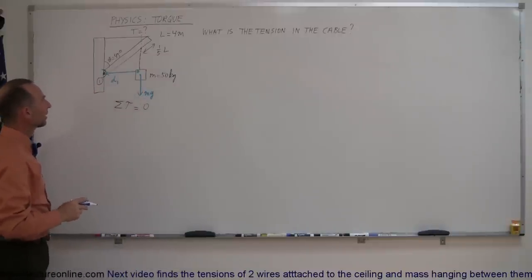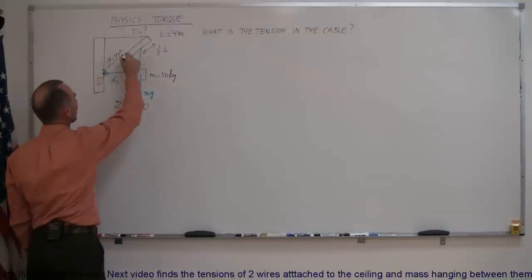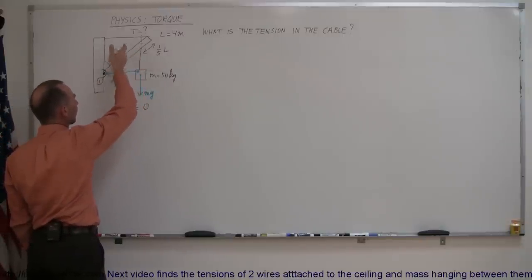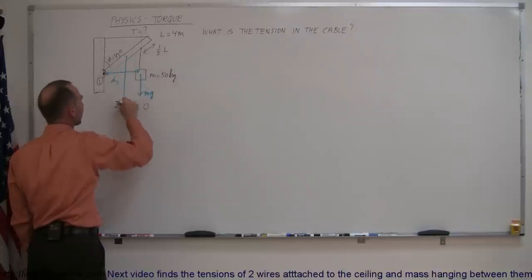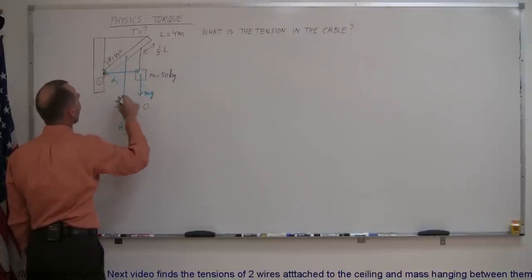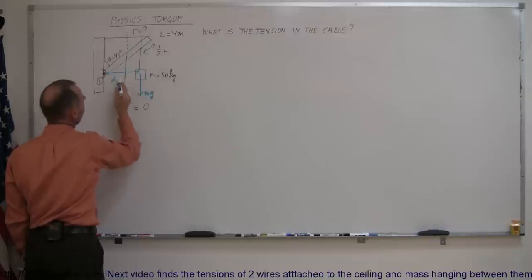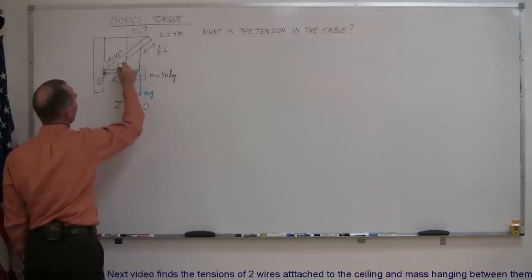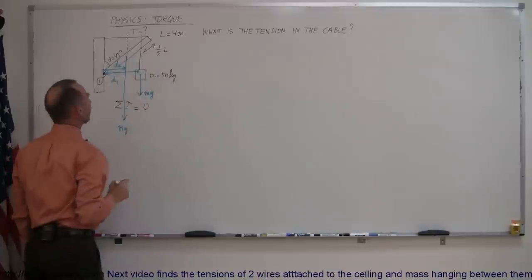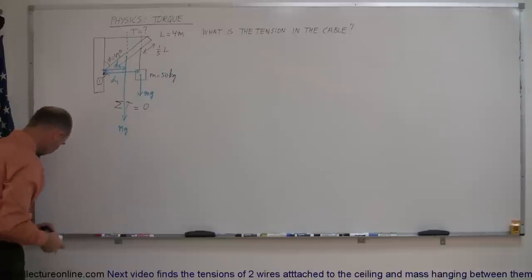We have a second force: the mass of the beam itself. The mass of the beam acts as if all of it acts through the center of mass, so we have big Mg coming down. The line of action of that force is this line right here, and this distance from that point to that point is distance two — the perpendicular distance associated with the second force.